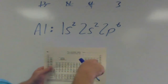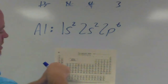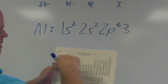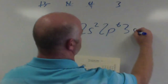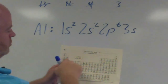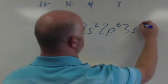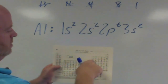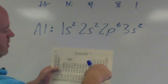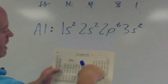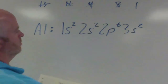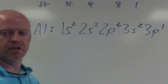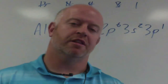On the third energy level, in the S block, I can put 2 of those electrons, which means I have 1 left. So I go across, and in my P block on the third energy level, I have 1 electron left for aluminum — 3P, 1 electron. That is the electron configuration.